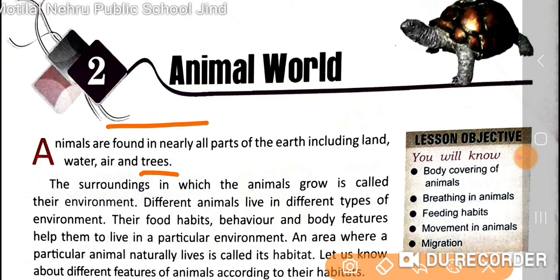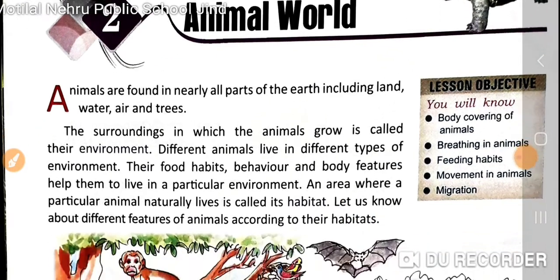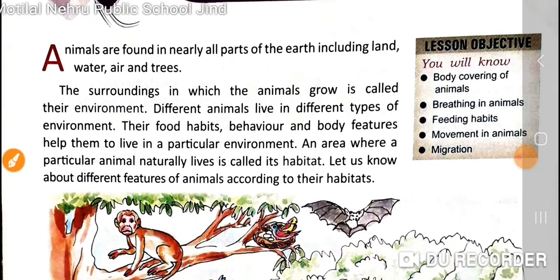An area where a particular animal naturally lives is called its habitat. Just like each person has their own house, each animal has its particular space known as its habitat. Let us learn about the different features of animals according to their habitat.